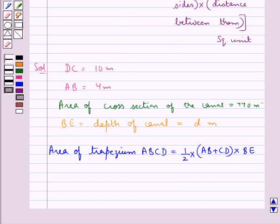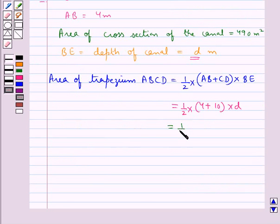So this is equal to half times AB, that is 4, plus CD or DC, that is 10, times BE that we have taken as d. So this is equal to half times 14 times d square meters. Now 2 times 7 is 14, so this is equal to 7d square meters, which is the area of trapezium ABCD.